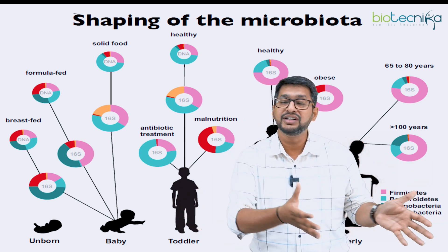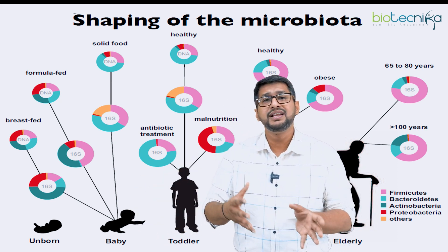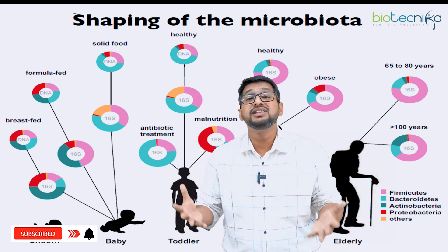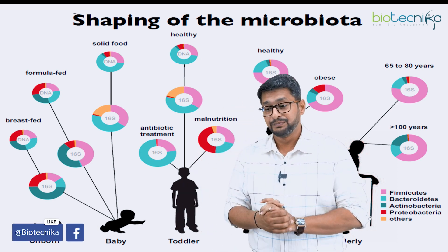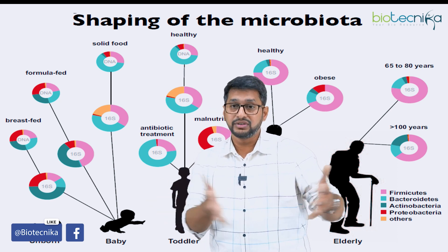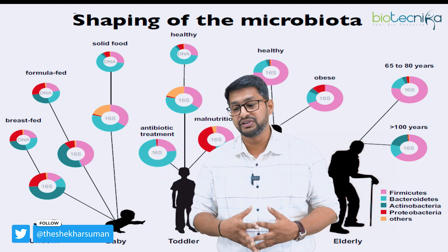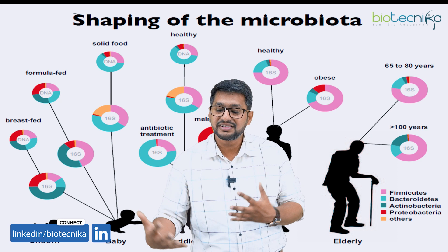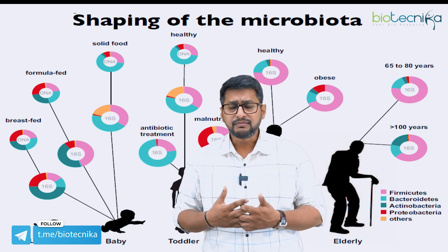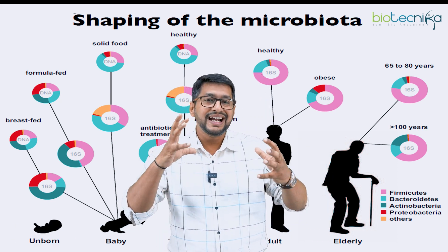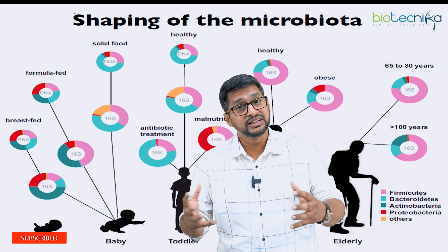During adulthood, you can see how exactly the microbial consortium changes between a healthy individual and a diseased or disordered individual — for example, someone suffering with obesity, diabetes, hypertension, or even anxiety and depression. Later in life, from age 65 to 80, there are various kinds of microbial changes which take place and can lead to very poor health. The kind of microorganisms you harbor plays a very important role in the health of a given individual.